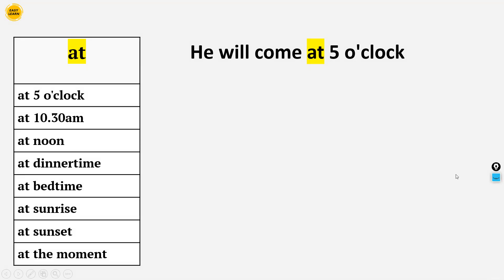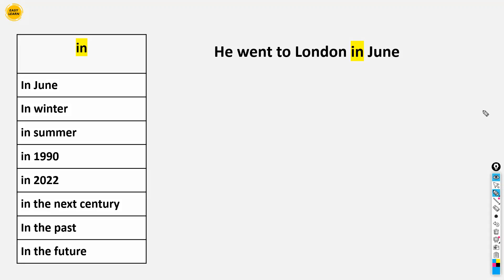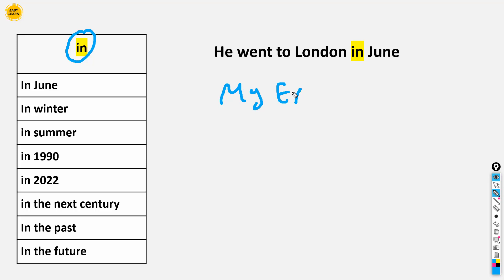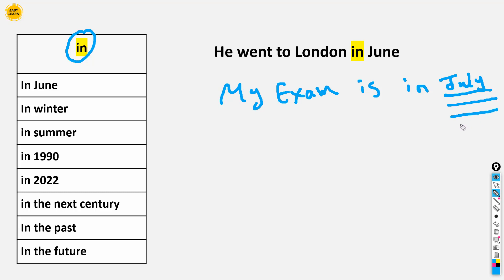Now let's move to the next one — 'in'. Where can we use 'in'? For example: 'He went to London in June.' When we talk about months like June, July, August, September, October, November, December, we use 'in'. For example: 'My exam is in July', 'My exam is in August', 'My exam is in April', 'My exam is in November.' Also, for seasons: 'He comes in winter.'